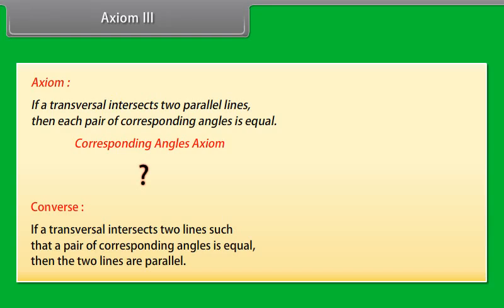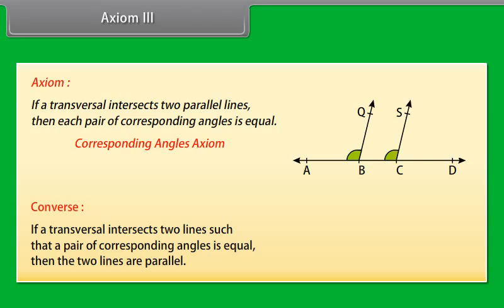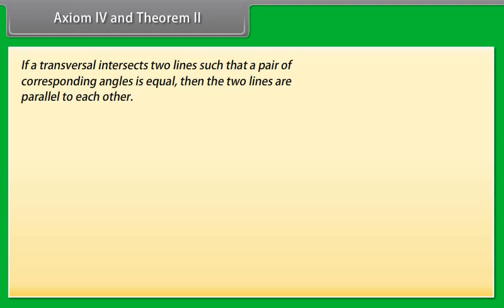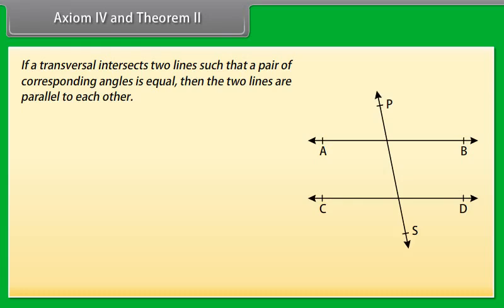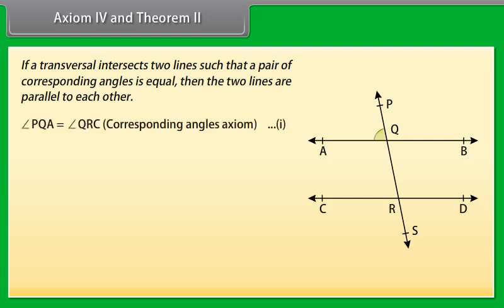Now let us discuss the converse of the axiom: if a transversal intersects two lines such that a pair of corresponding angles is equal, then the two lines are parallel. Draw a line AD and mark points B and C on it. At B and C, construct angles ABQ and BCS equal to each other. Produce QB and SC to form two lines PQ and RS. We observe the two lines do not intersect each other, and common perpendiculars drawn at different points have the same length everywhere, so the lines are parallel. Therefore, Axiom 4: if a transversal intersects two lines such that a pair of corresponding angles is equal, then the two lines are parallel to each other.